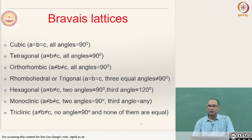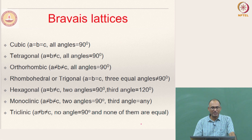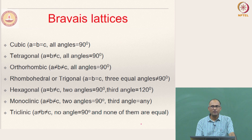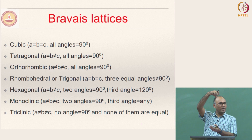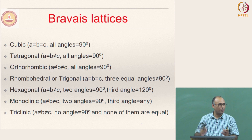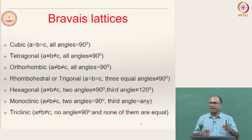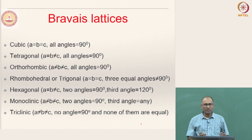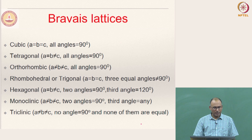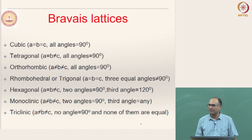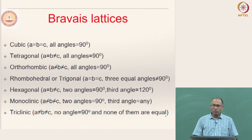There are seven basic geometries of the unit cell. Cubic: A = B = C, alpha = beta = gamma = 90 degrees. Tetragonal: two sides are the same and the third side is different — like taking a cube and pulling it in one direction. Orthorhombic: pulling in two directions so that none of the sides are equal. Rhombohedral or trigonal: all sides are equal but the angles are not equal to 90 degrees. These are the seven fundamental unit cell geometries.